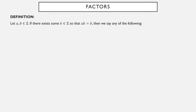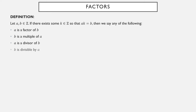Here's our first definition. Suppose a and b are two integers. If there is a third integer k so that a times k is equal to b, then we can say any of the following — they all mean the same thing: a is a factor of b, or b is a multiple of a, a is a divisor of b, or b is divisible by a. When writing it out, we write a and then this vertical line b, spoken aloud as simply 'a is a factor of b.'